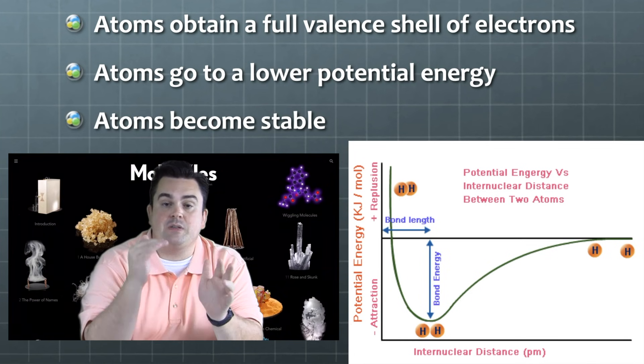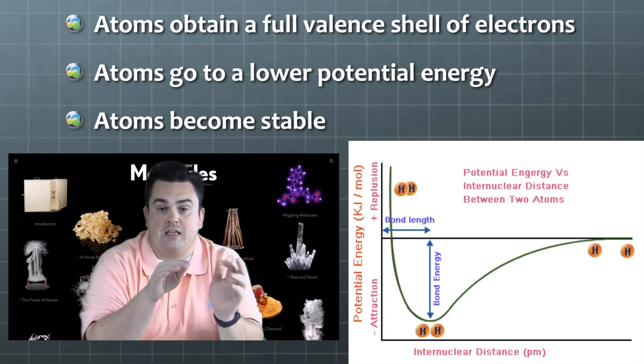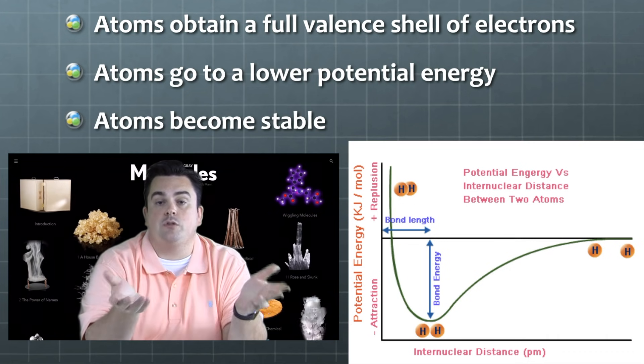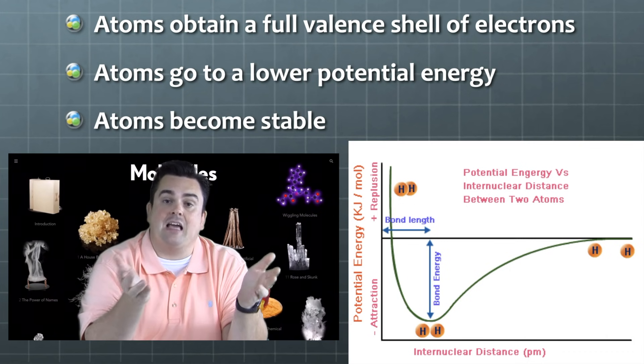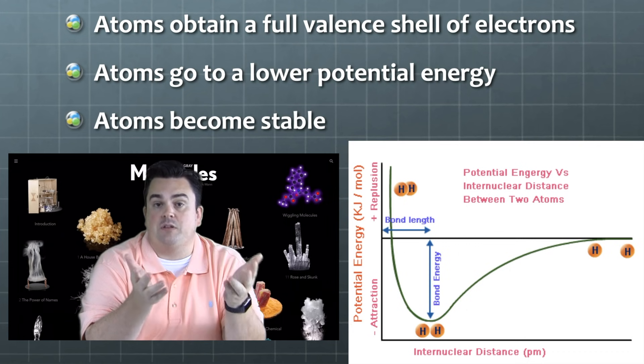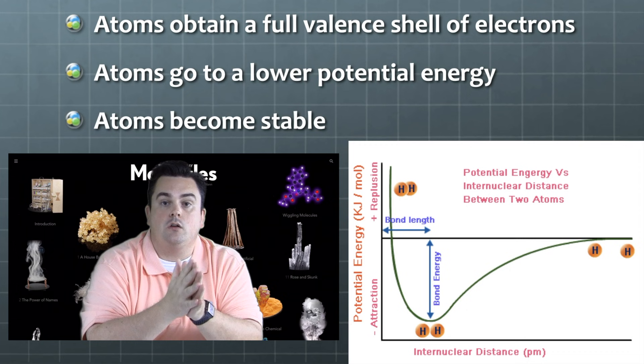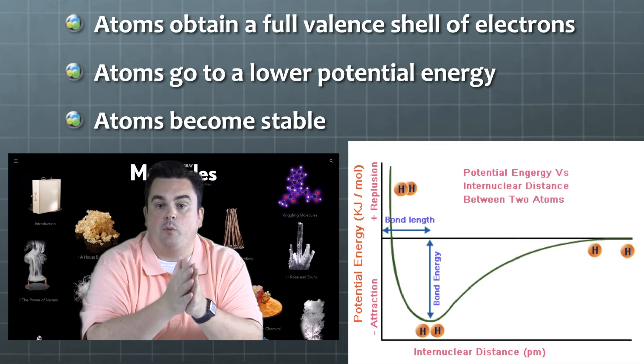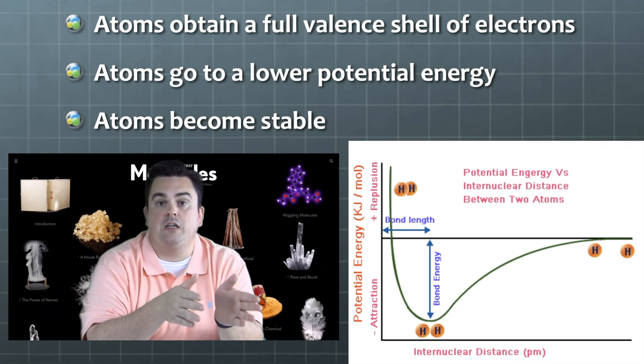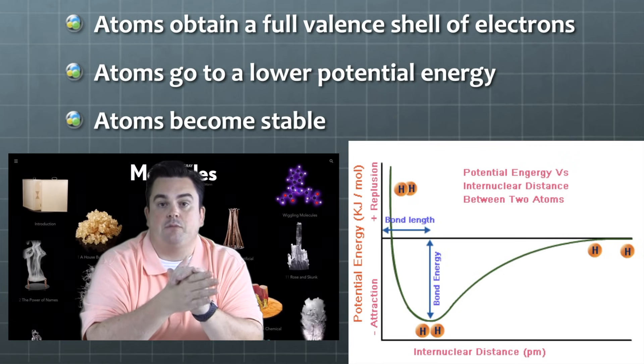If you take a look at the right side of this graph, we have two hydrogen atoms. Now, they're not bonded yet, and there's a specific amount of potential energy, as that flat line shows, of those two atoms. Now, as those atoms come closer together, they're allowed to bond. When they do, they become more stable.